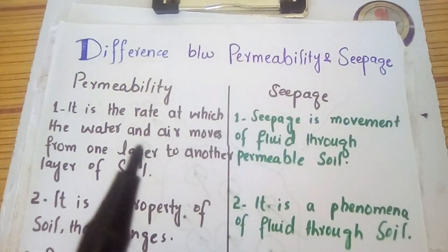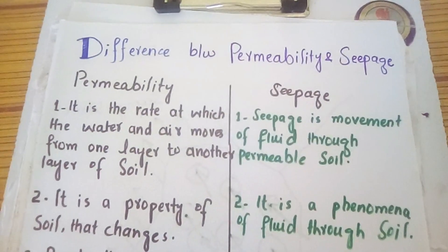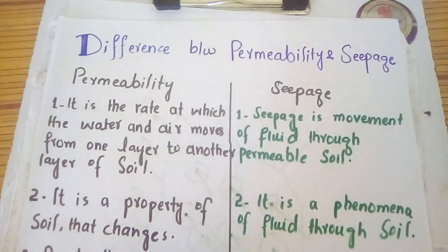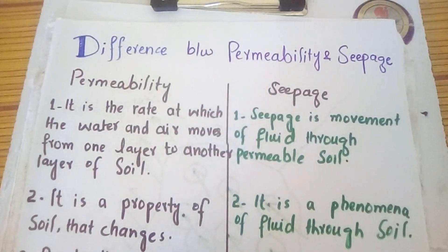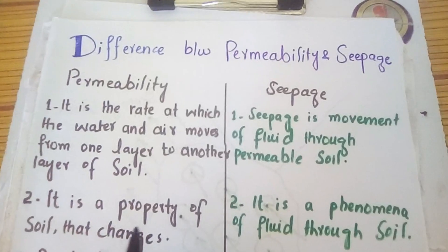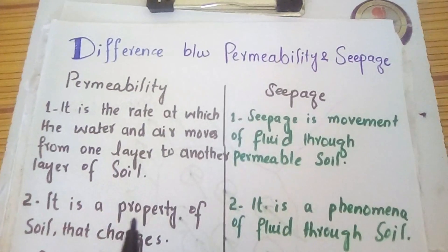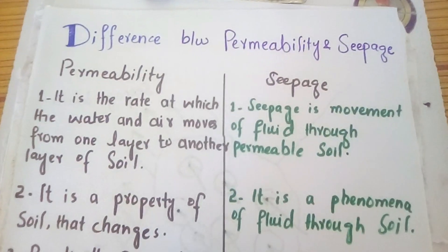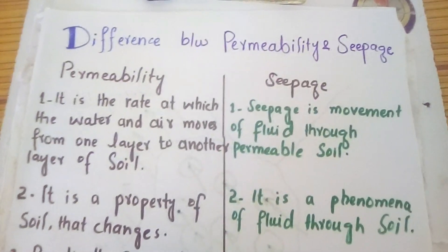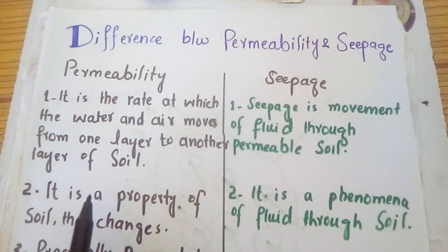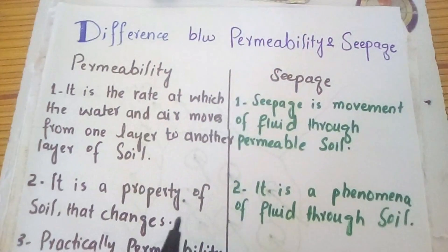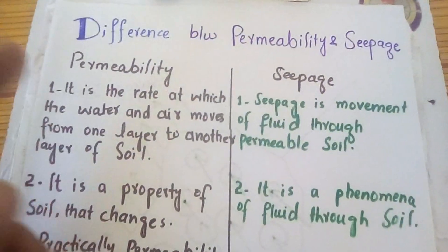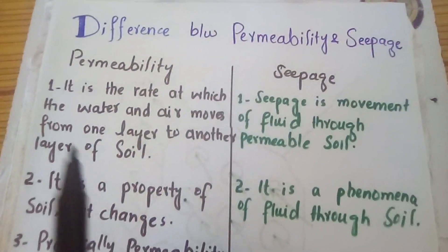From these definitions we know that permeability is a property of a soil that can be changed. The permeability of any soil defines the rate at which water and air will move from one layer to another. Permeability is essentially the total summation of all pores through a soil — if a soil has more pores, its permeability will be greater.